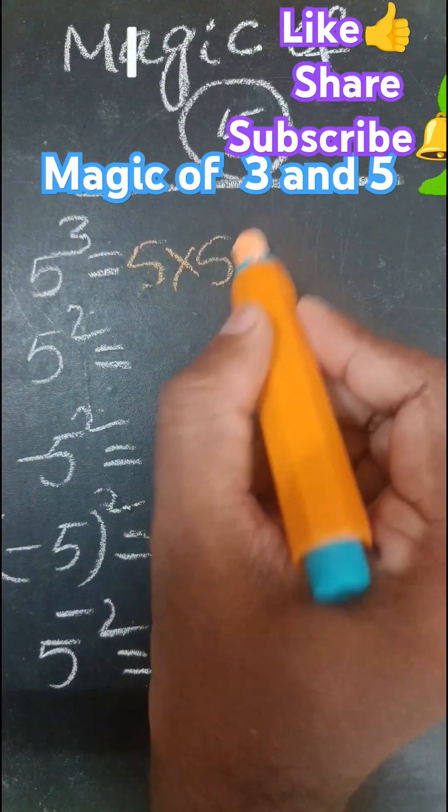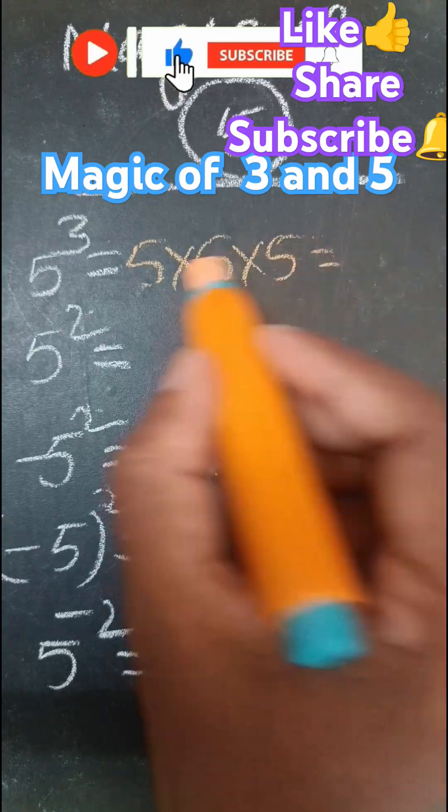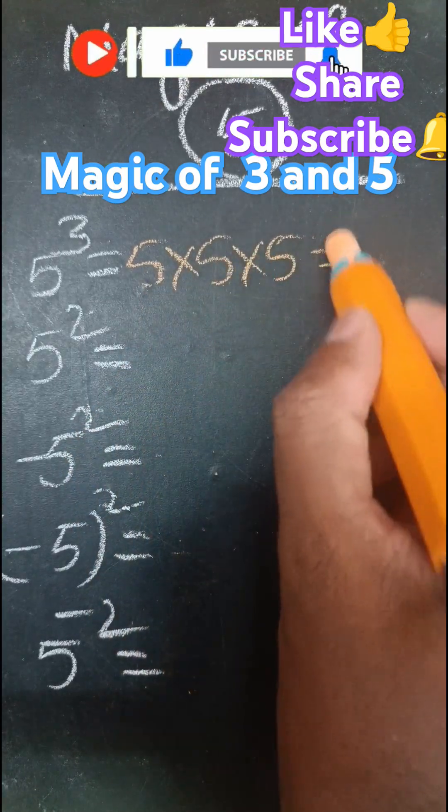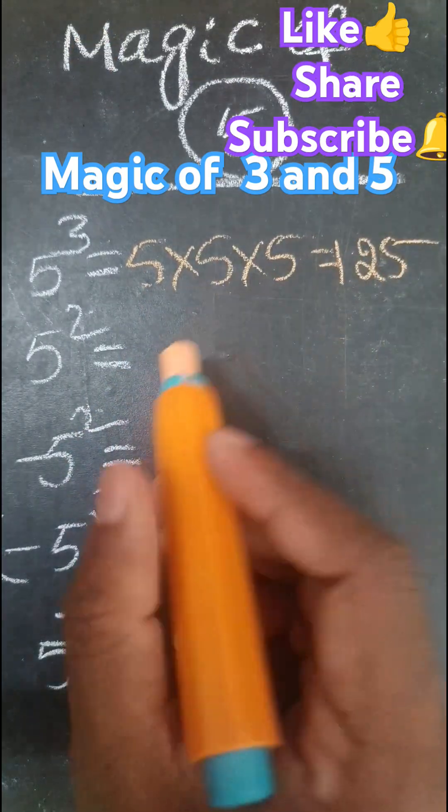5 into 5 into 5. 5, 5 is 25, 25, 5 is 125. Next,